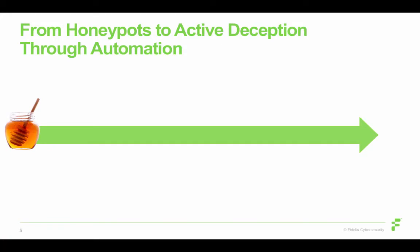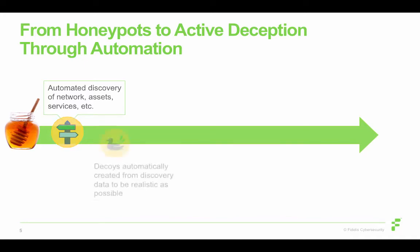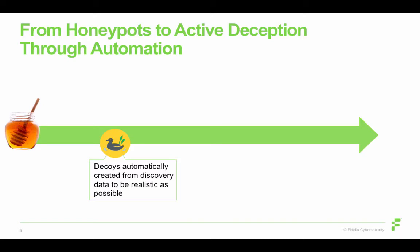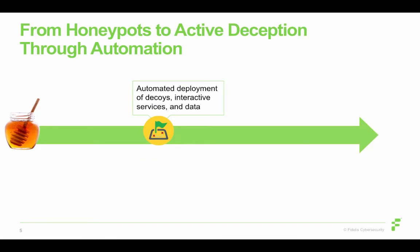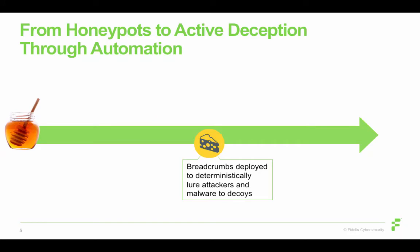How do we evolve from honeypots to active deception through automation? First, we look at automated discovery: we map the network, profile all the assets, and build out this discovery base. From that discovery base, we can automatically build decoys that match the real environment as realistically as possible — matching the profile of the assets, the services they provide, how they communicate — creating a very attractive environment. After automatically building those decoys, we deploy them through automation, finding the best places to put them with their selective interactive services and fake data. We also make deception deterministically calculated, putting breadcrumbs on real systems so they lure attackers or malware to these decoys. That interaction from the breadcrumb on a real system to the decoy system is really the modern focus for deception today.